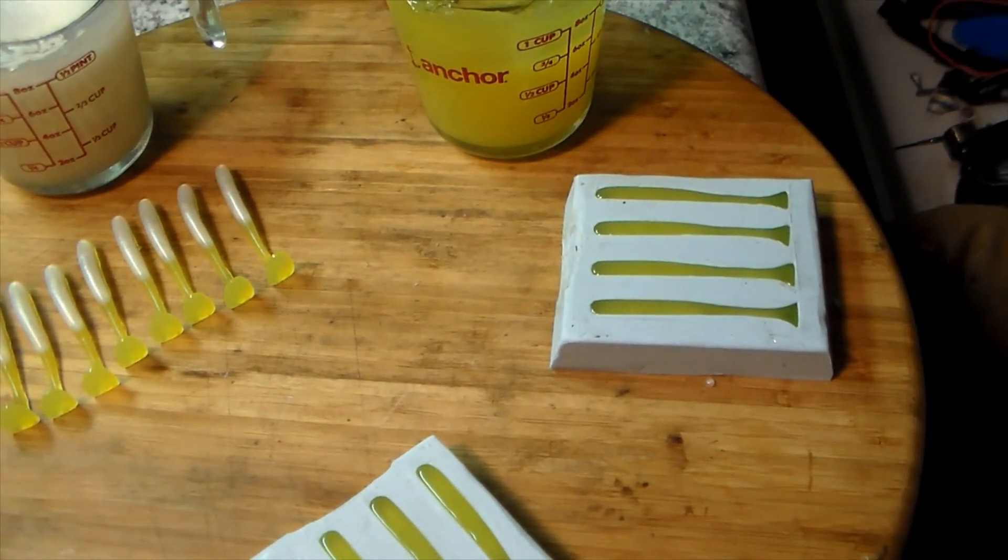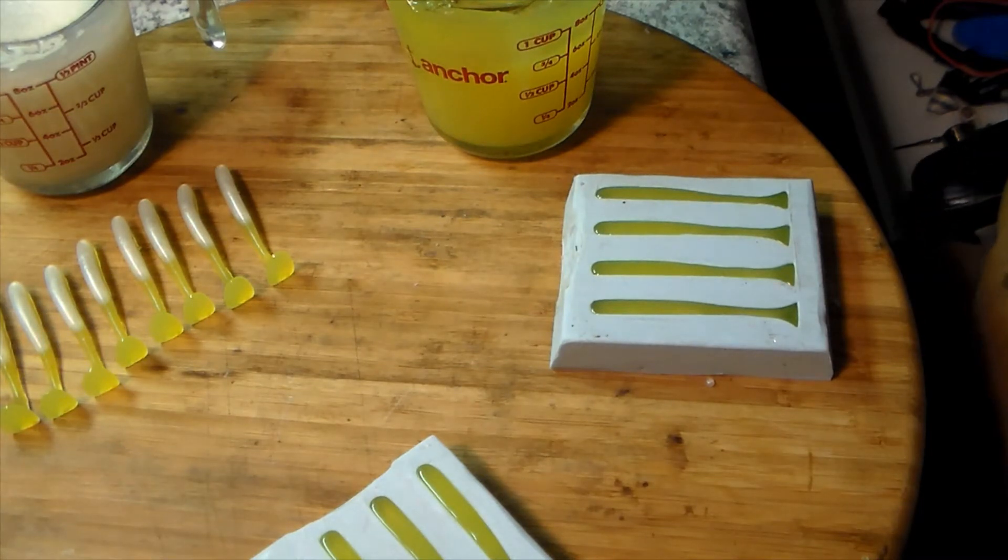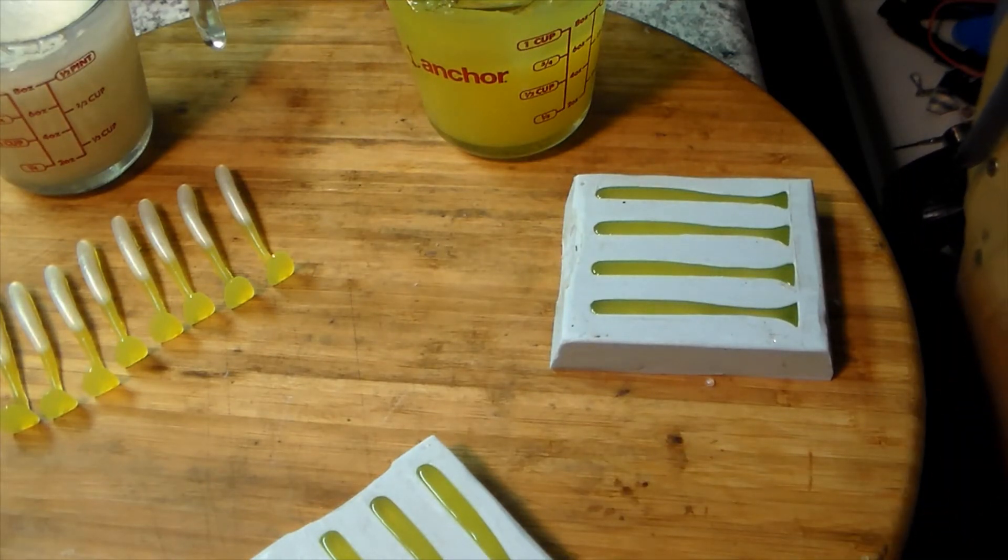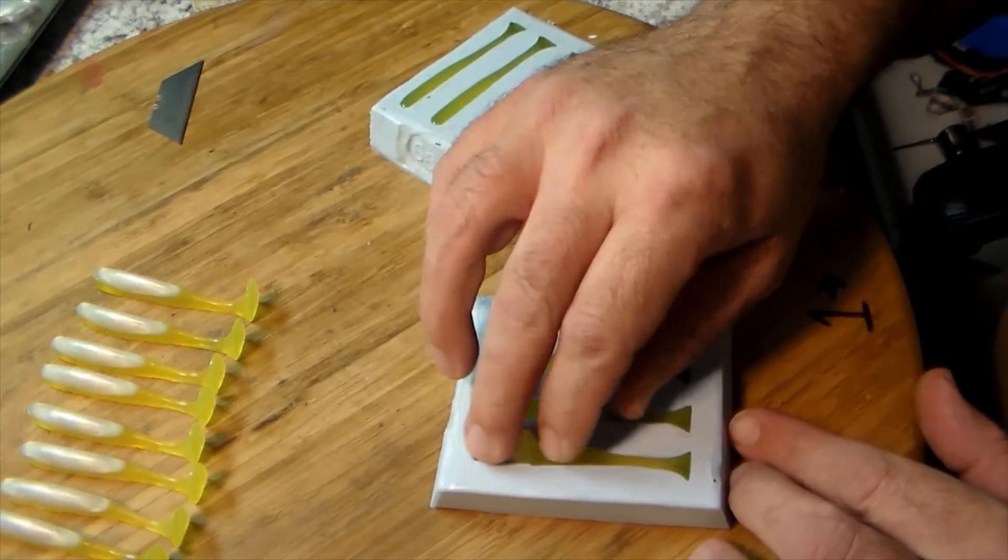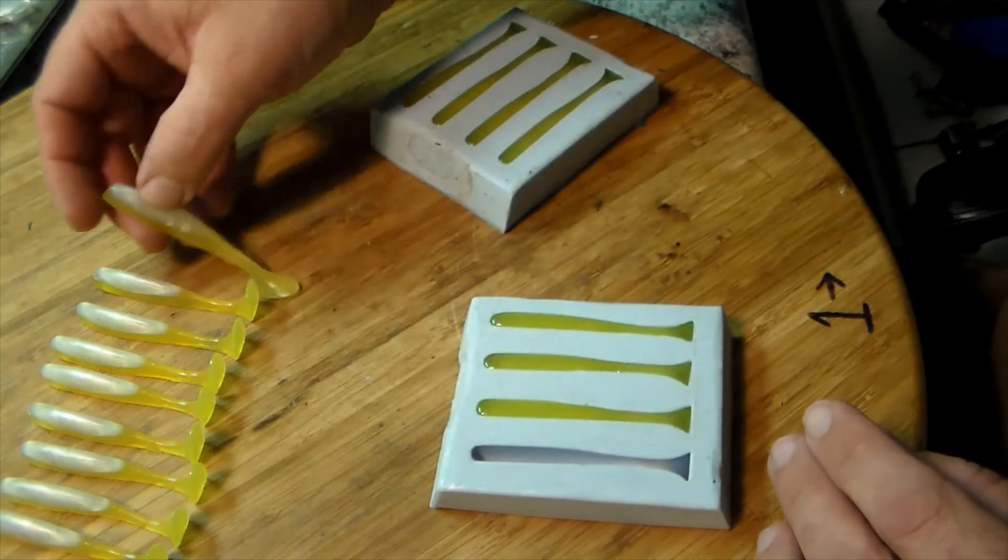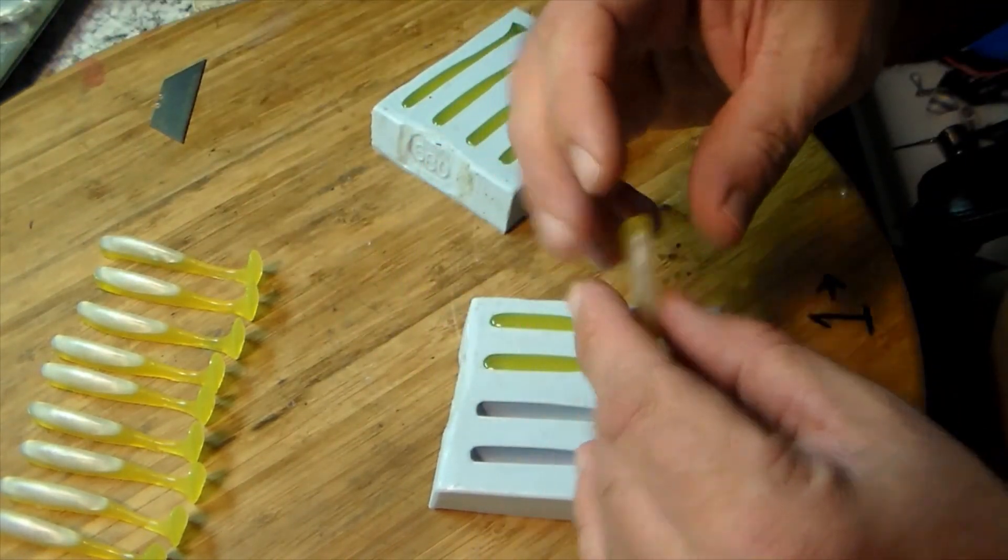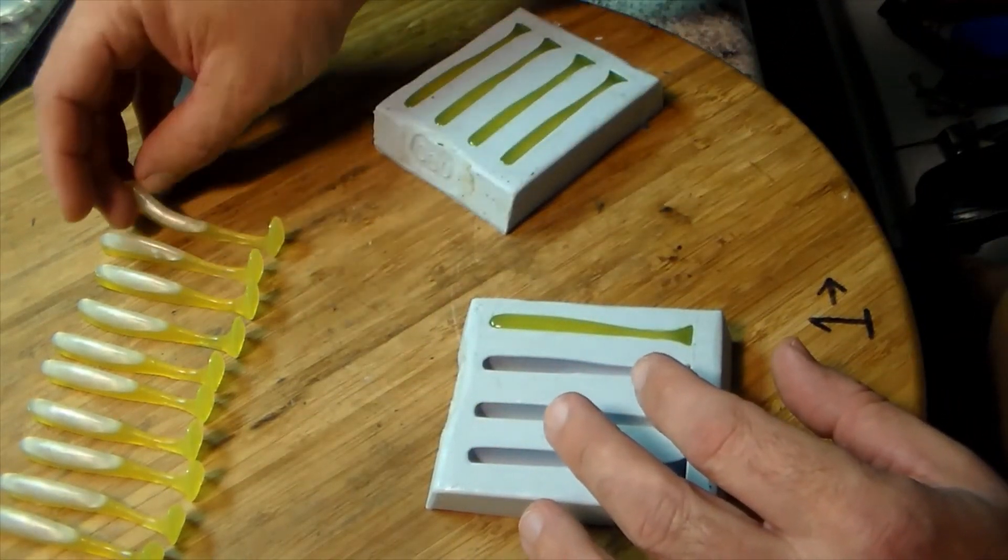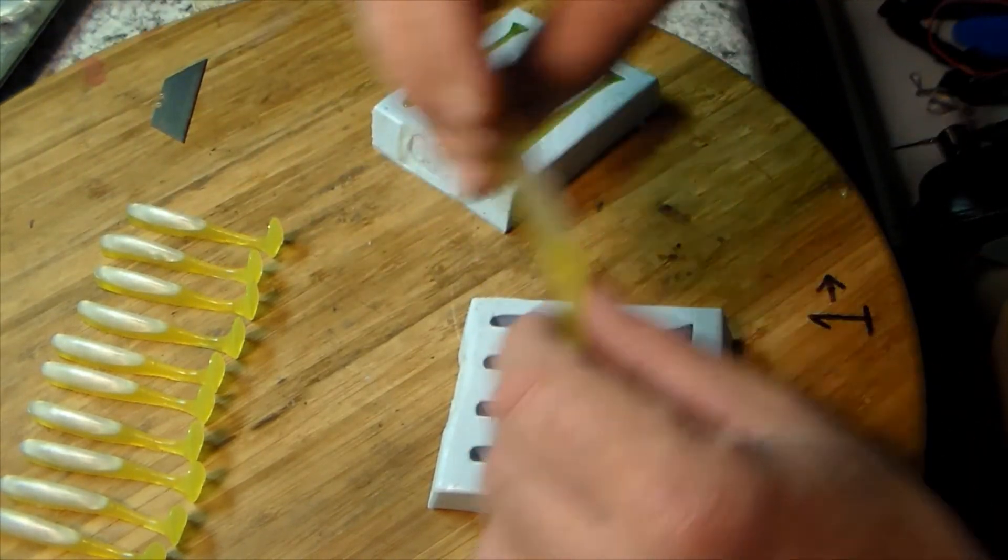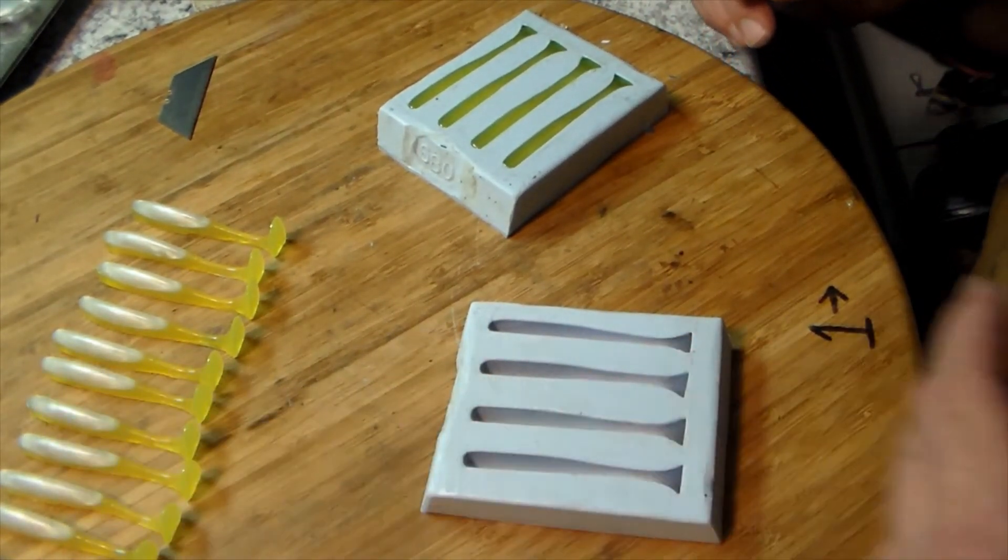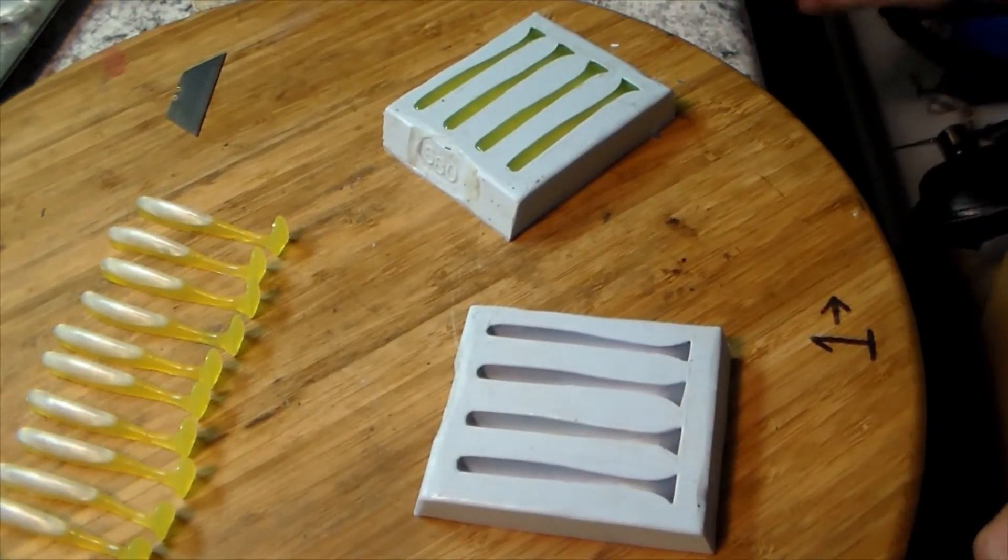There we go, reheat my plastic. We'll let them set up, pull them out, take a look at them, then we'll reverse it - we'll go chartreuse belly, pearl white back and tail. That's better. When you pull these things out of the mold you're gonna lay them down, keep everything nice and straight. You lay one down that's got a tail bend or something like that and it cures the rest of the way, that's how it's gonna be.